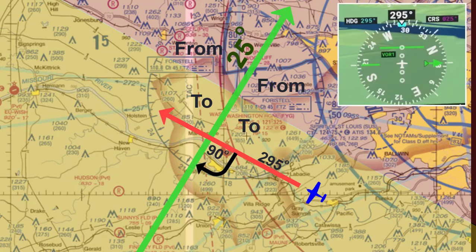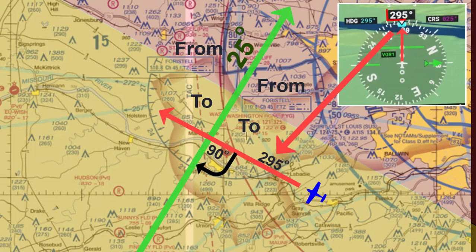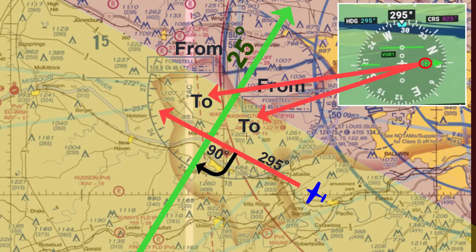Looking at a still shot of the HSI, let's see how this looks. We've got the CDI needle pointing to a 25-degree heading that corresponds to the radial. We are flying a current heading of 295 degrees. We are using the heading bug to keep us on that heading using the autopilot. Notice the TO arrow pointing in the direction of the CDI needle arrow, indicating we are on the TO side as related to the 25-degree radial.